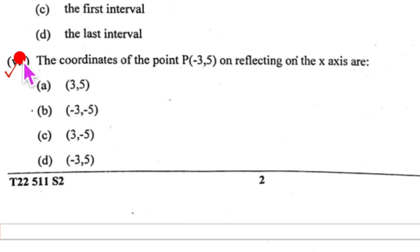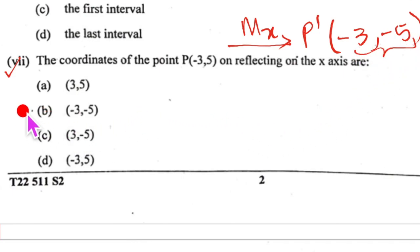Let us look at our seventh one. Coordinates of point P minus 3 comma 5 on reflecting in x axis. Now when it is reflected, it will become let us say P dash and this x remains the same and y will change the sign. So where is minus 3 and minus 5 here. So the option is B.